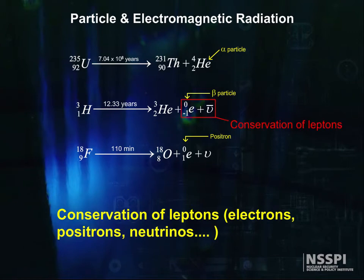With beta minus decay, since there is a real electron, there must be an anti-neutrino to balance the lepton books. With positron decay, because there is an anti-electron, there is a real neutrino, again, to bring balance to the universe.